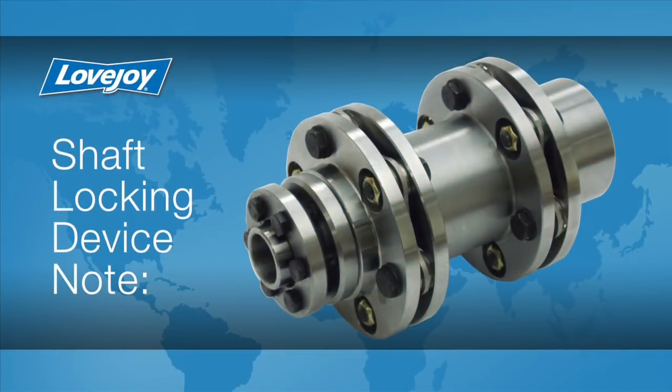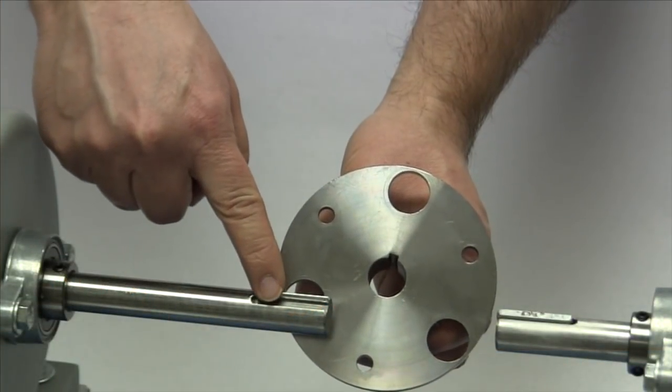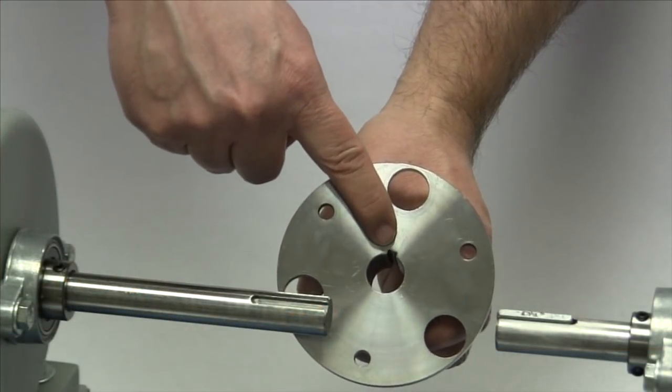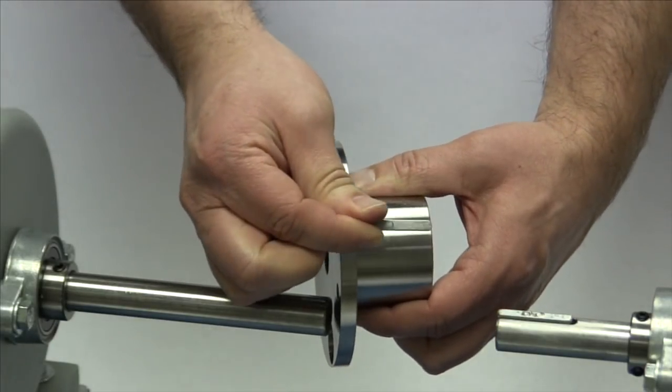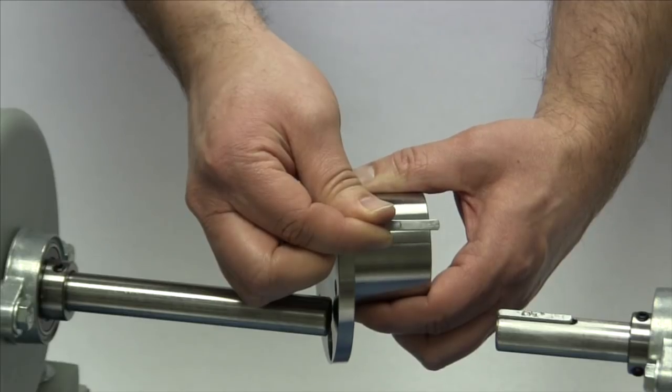Except in applications where a Lovejoy SLD or shaft locking device is used, both shafts and hubs should have keyways. To accommodate dynamic balance and allow for maximum torque transmission, the length of the key should always match the length through bore of the hub.